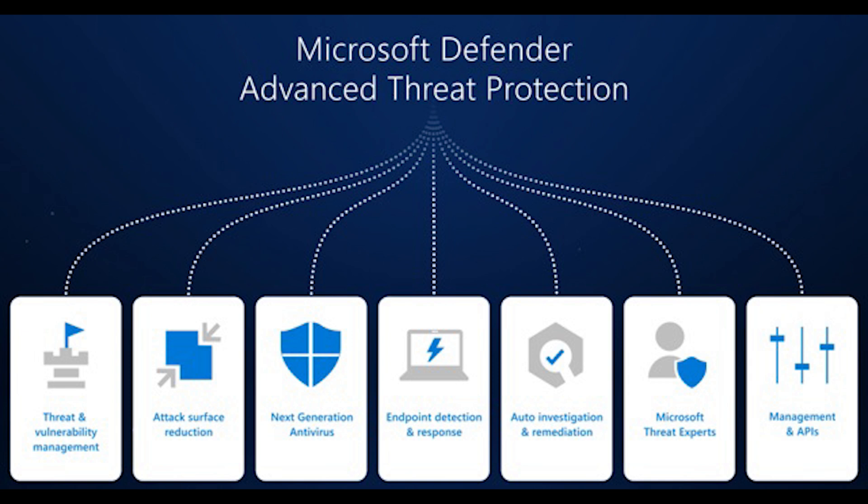Other methods include setting up a firewall and creating rules. Windows 10 attack surface reduction rules are part of Windows Defender Exploit Guard, and they can protect certain processes and executable processes that attackers use.